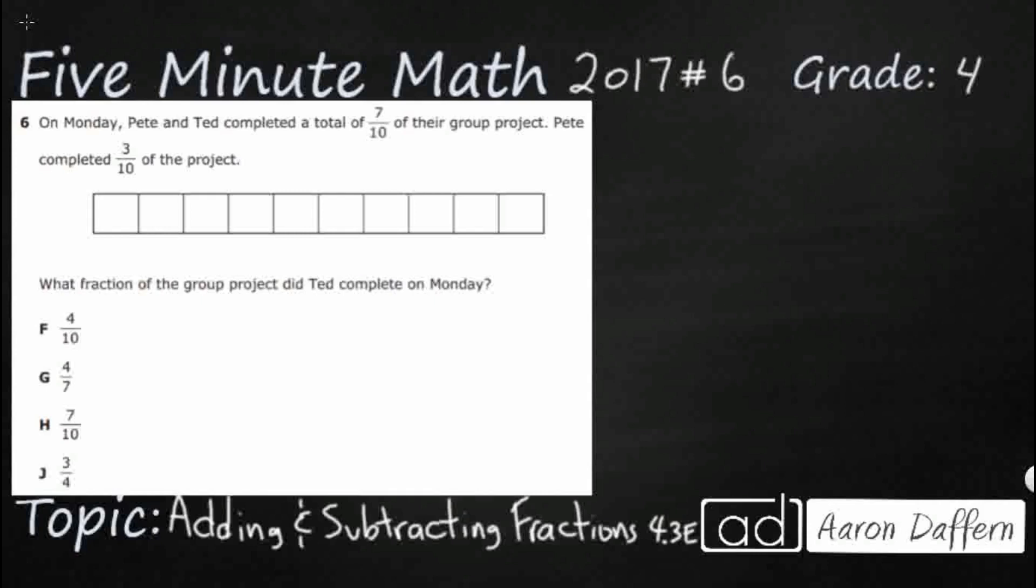So we have Pete and Ted. Now this is going to be important here, so it's on Monday, so this is all happening at the same time. Pete and Ted, so we have to combine those two. Pete and Ted together completed a total of seven tenths of their project and then Pete completed three tenths of that project, which means how much did Ted complete?